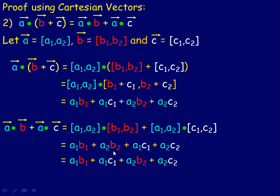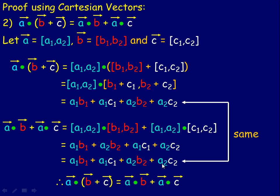We could rewrite it. The only thing we have to change is the first are the same, the last are the same. These are in the opposite order, that's all. So we get a₁c₁ here. I can just change the order quite easily. And so they are exactly the same. We can conclude then that a dot (b + c) is equal to a dot b plus a dot c. So that's an algebraic proof using Cartesian vectors.